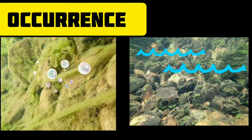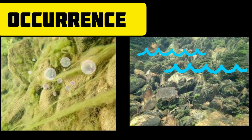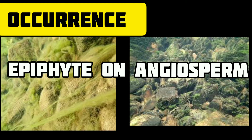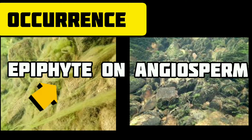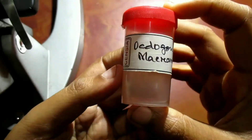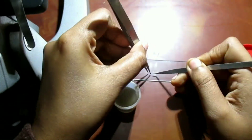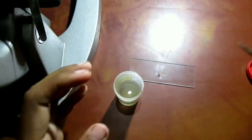Oedogonium is a submerged aquatic filamentous green alga found to occur in quite permanent and semi-permanent freshwater of pools, jheel, tanks, and ditches. All species are sessile when young — found attached to various substrates underwater, usually as epiphytes upon stems and leaves of aquatic angiosperms or upon other filamentous green algae. Now I will be describing its vegetative structure with a live specimen.